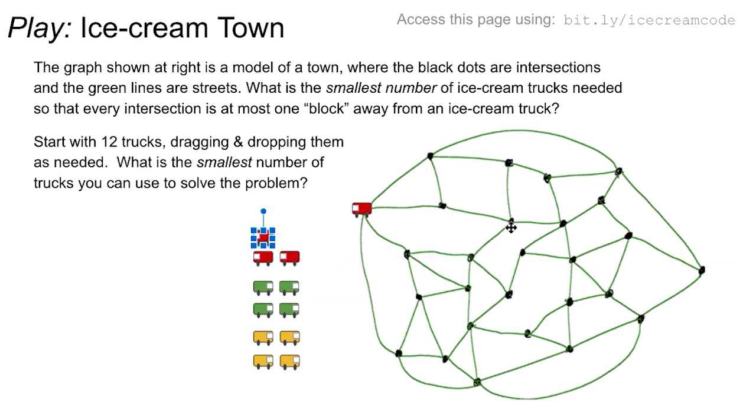So I would encourage you now to think, what's the minimum number of ice cream trucks? I've started out giving you 12 here. What's the minimum number of ice cream trucks you could use to cover this graph so that in the middle of the night, if somebody wakes up, they have to walk at most the block. So if I put one there, then I would not need one there, but I could put one there instead like that, like every other one.